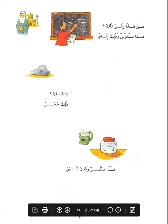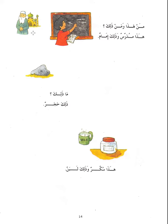من هذا ومن ذلك — who is this and who is that? We've spoken about من in the previous lesson. هذا مدرس — this is a teacher. وذلك إمام — and that is an imam, meaning the one who leads the people in the masjid. ما ذلك — what is that? ذلك حجر — that is a stone. هذا سكر — this is sugar. وذلك لبن — and that is milk.